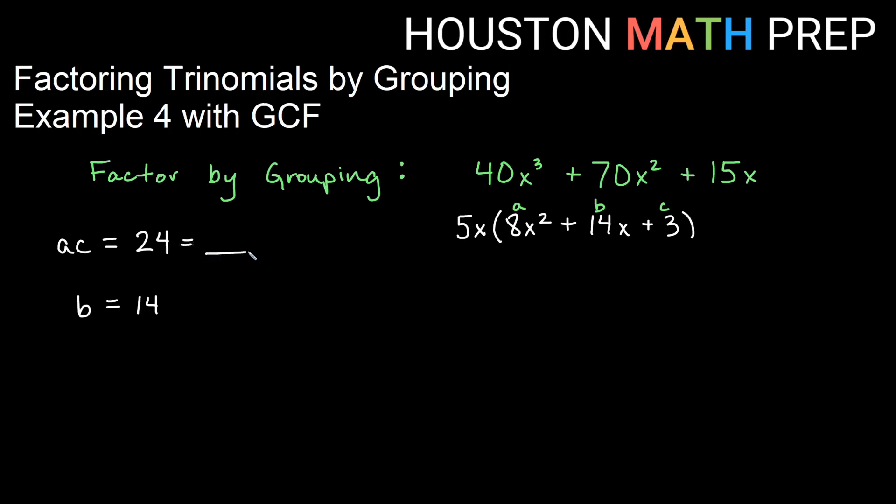And the magic method is, are there two numbers that will multiply to give us A times C with those same two numbers adding to give us B? If we're not sure, some of you might already be sure, but we can write down pairs of factors that give us 24.